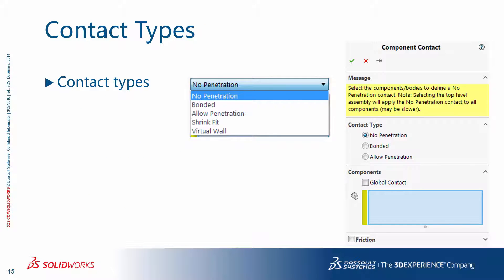There are different types of contacts available. No penetration lets surfaces separate from each other but not penetrate into each other. Bonded keeps the surfaces together as if they are welded or glued. Allow penetration lets surfaces separate but does not enforce that loading conditions prevent penetration — which physically is not possible, so if you are concerned about that, use the no penetration option instead. Finally, there are the less commonly used, more specialized cases of shrink fit and the virtual wall.